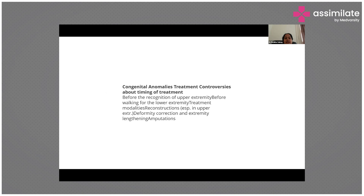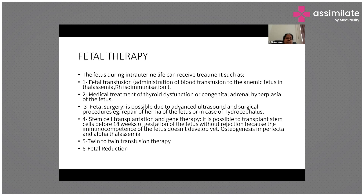There are treatment controversies regarding timing - for upper extremity problems, treatment should be done before the recognition of upper extremity function, and for lower extremity problems, before the child starts walking. Treatment includes reconstructive surgeries, deformity correction, extremity lengthening, and amputations.